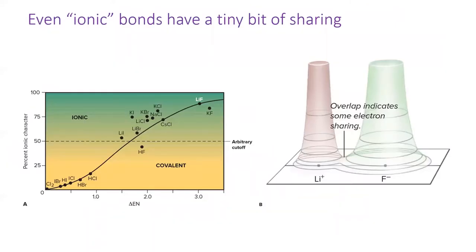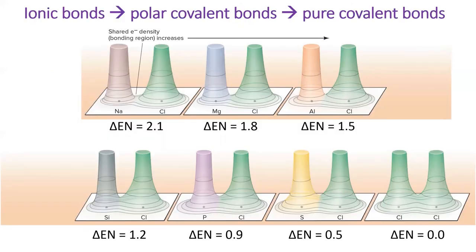However, even bonds we would consider extremely ionic, such as the ionic bond between lithium and fluorine, have a small amount of electron overlap, meaning there's no such thing as a purely ionic bond. This figure visualizes the range of electron distributions when bonds are formed between the period three elements. We see that the amount of electron overlap increases as the difference in electronegativity decreases. The most ionic substance on this slide is sodium chloride, and the most covalent substance is Cl2.